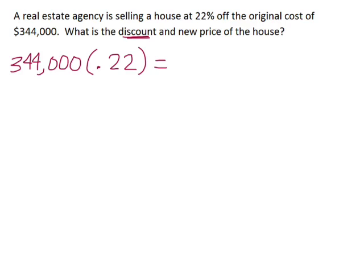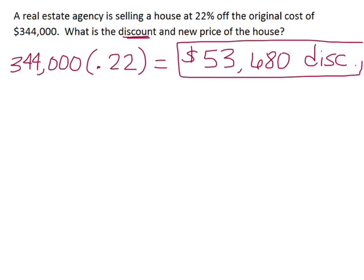So we're going to do $344,000 times, we change the 22% into 0.22. We get $53,680, which represents the discount. That is part of our answer.